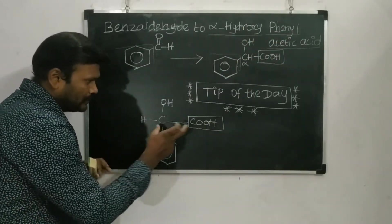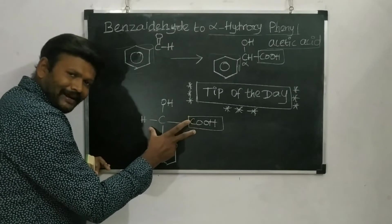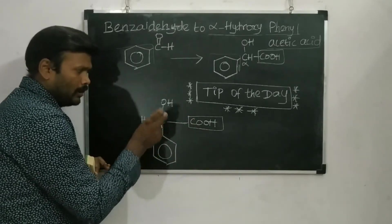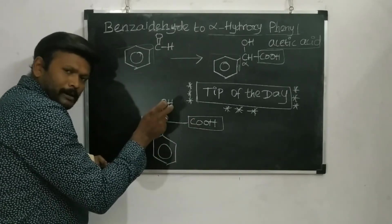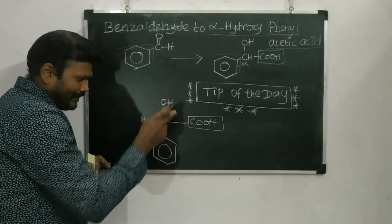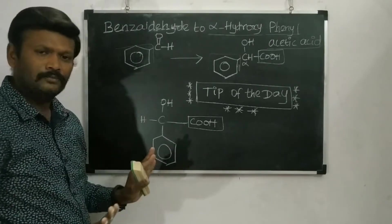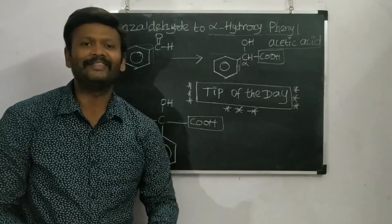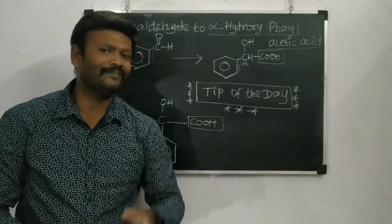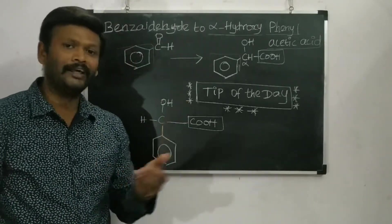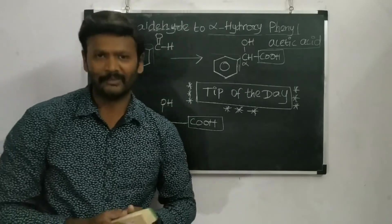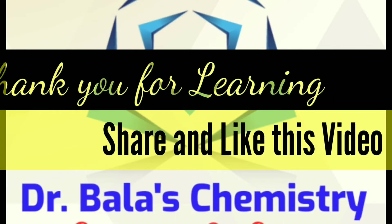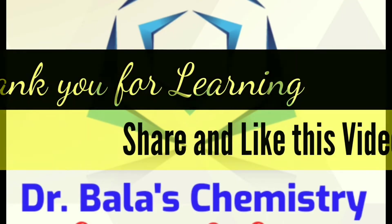So first, write the two-carbon carboxylic acid (acetic acid), then at the alpha position put the hydroxyl group as well as the phenyl group — that's it. I think you understand well. This tip will be very helpful to you. Thank you so much for watching and learning; please share and like this video.